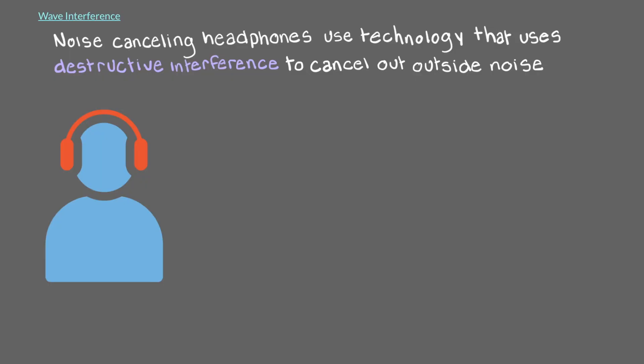Noise cancelling headphones use technology that uses destructive interference to cancel out outside noise. These headphones measure the noise reaching them using an external microphone, then they produce a wave that is exactly the same but with opposite amplitudes to the sound wave coming in. These waves cancel each other out, so you don't hear anything from the outside.